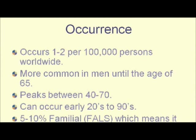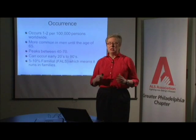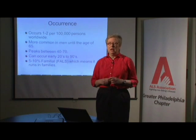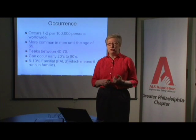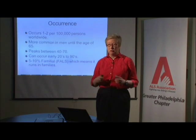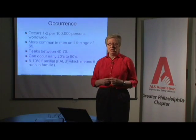ALS is more common in men until the age of 65, and then it equals out. It peaks between the ages of 40 to 70, which means that most people who get ALS are between those ages. However, we unfortunately see teenagers, late teenagers, who get ALS, and we've had people in their 90s diagnosed with ALS. So it varies as far as age.